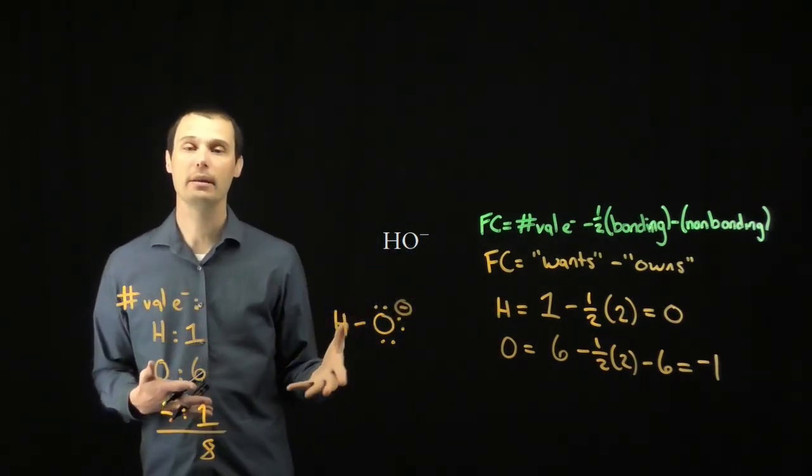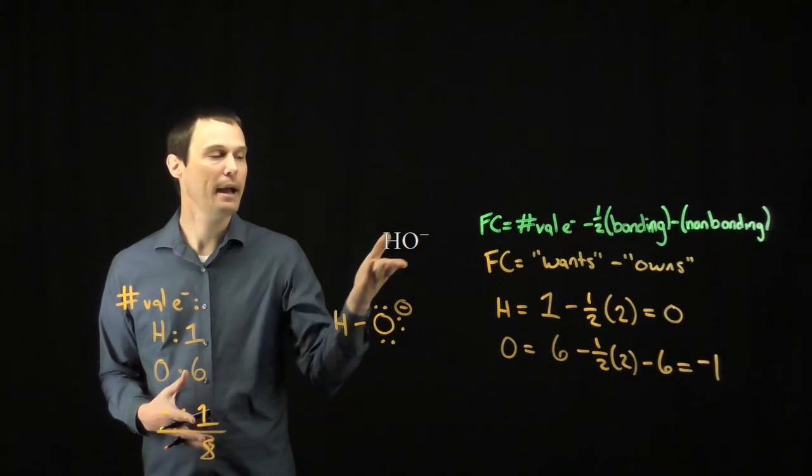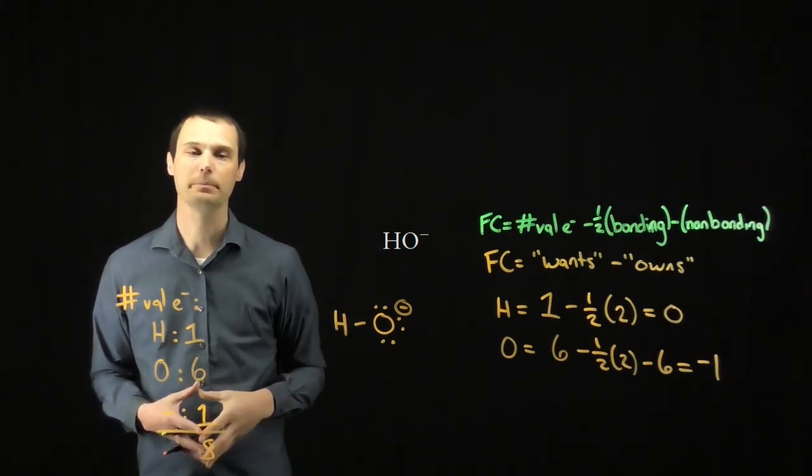This gives the net overall molecule a net charge of negative one, matching the structure we're trying to form. This is, in fact, the correct Lewis structure for the hydroxide ion.